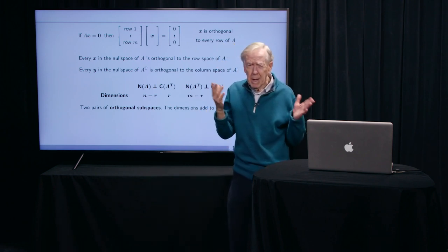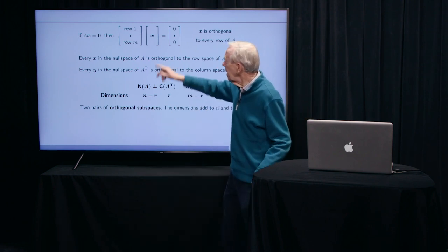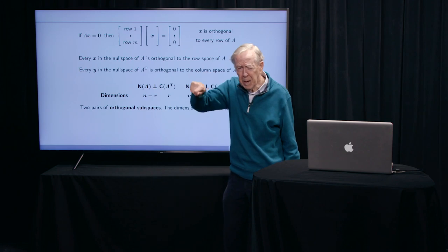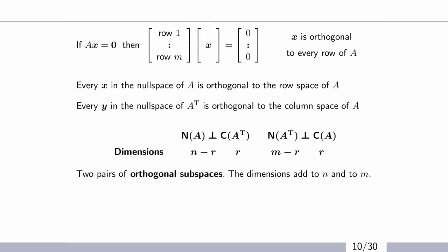So I'm looking to see, are there any vectors x that are perpendicular to all the rows? That's what A x equals 0 is asking for. And that's what I've just said right there.